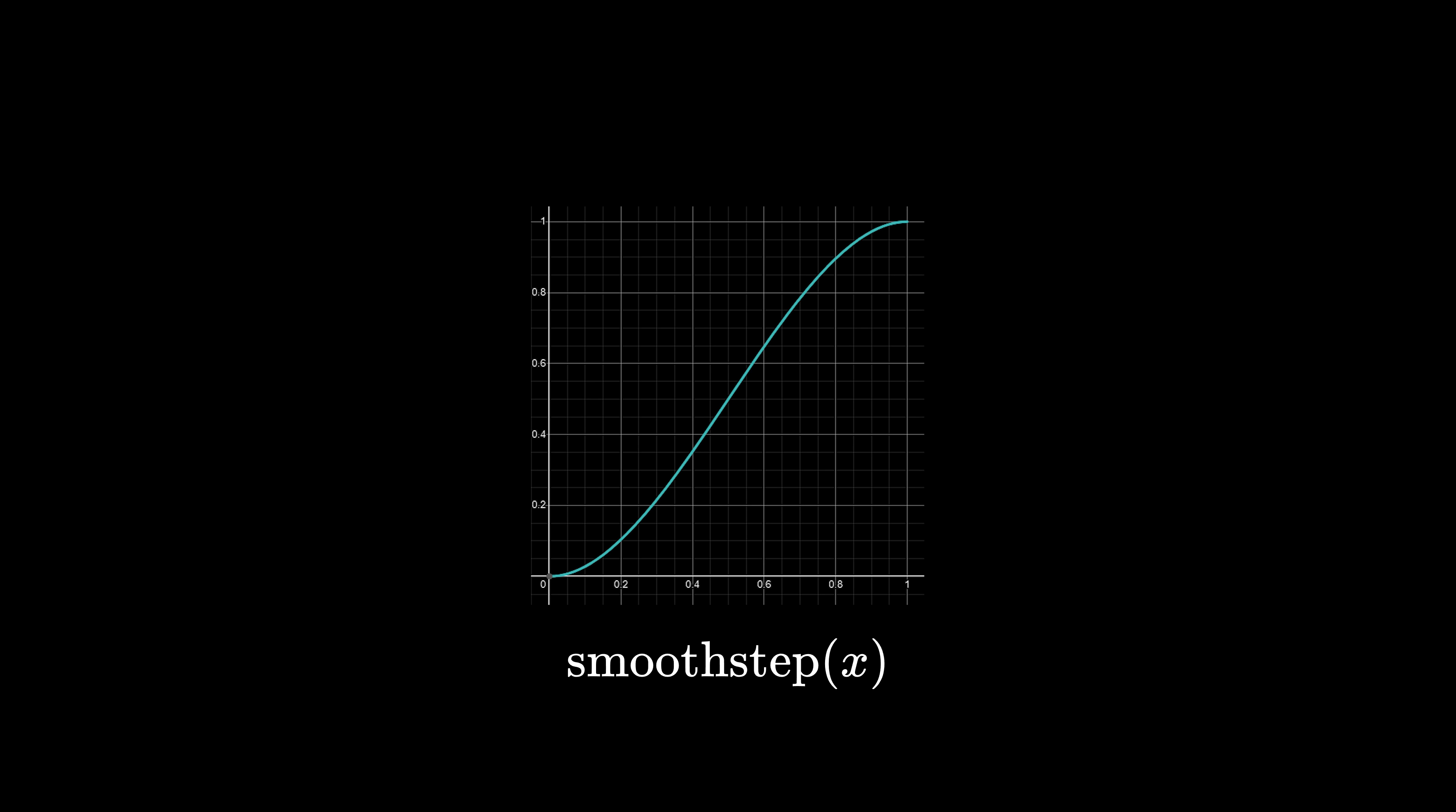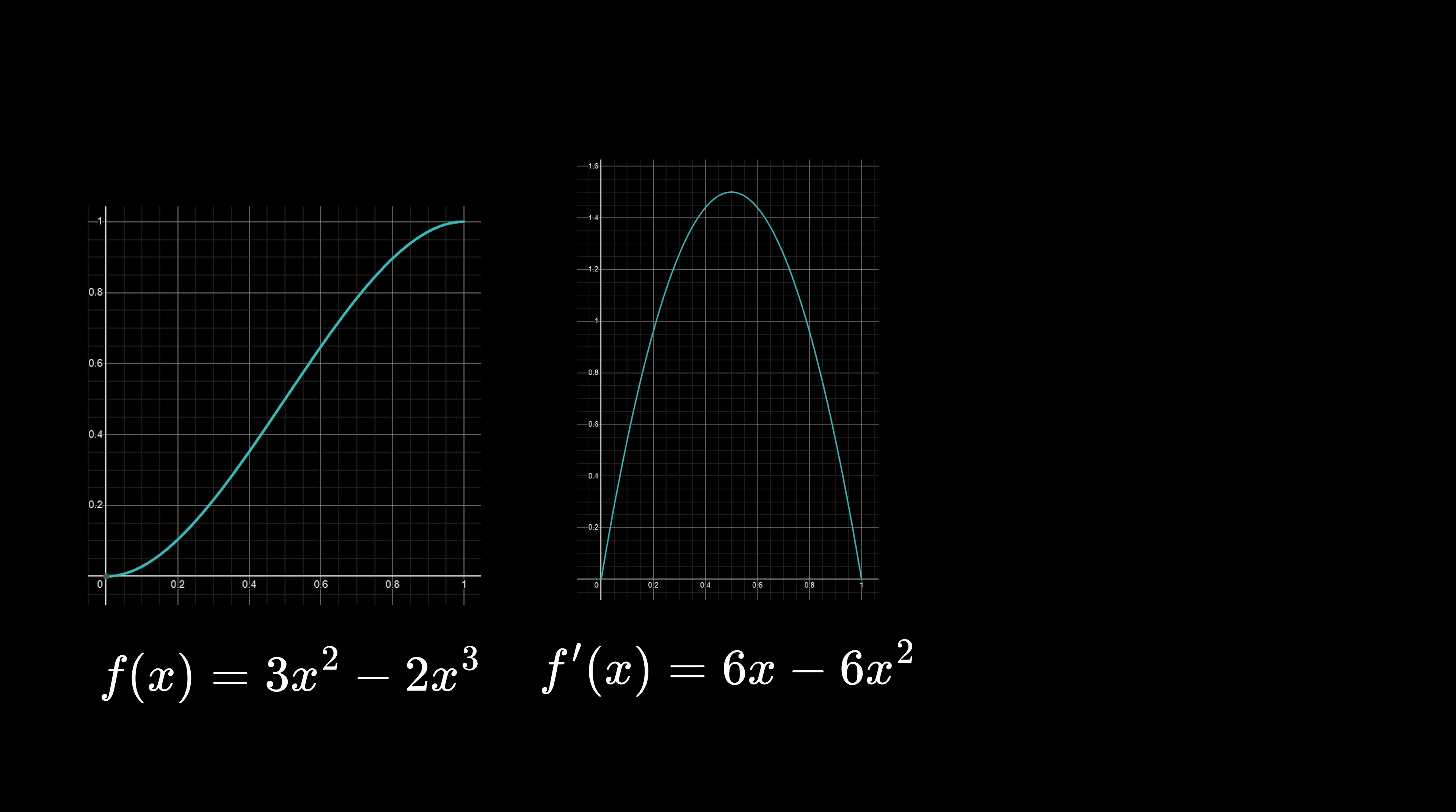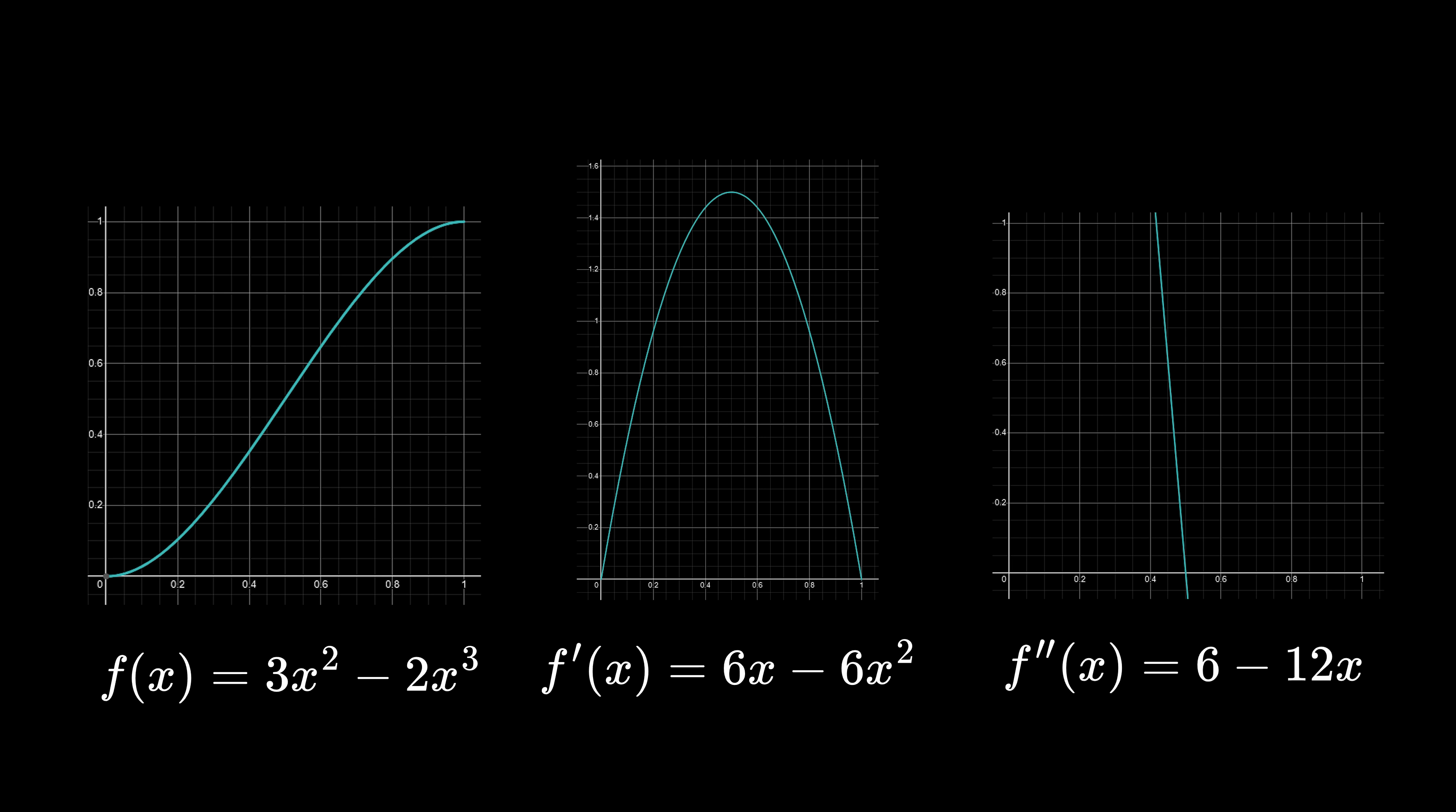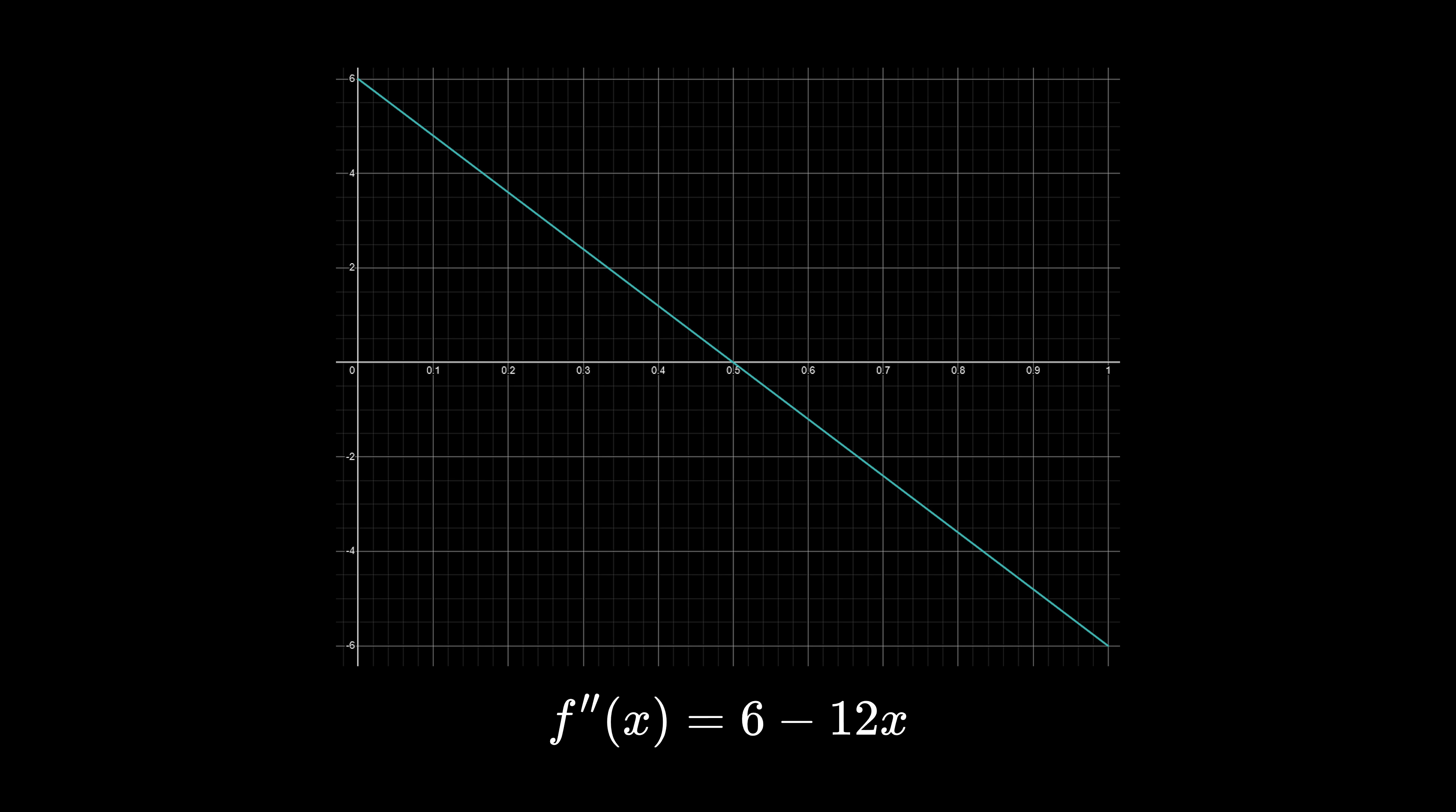Remember that a derivative of a function represents the change of the function at a given point, so if we take the derivative of the derivative, we can see how the derivative itself is changing. This reveals the problem. The second derivative is discontinuous at points 0 and 1, which our interpolant is evaluated at.